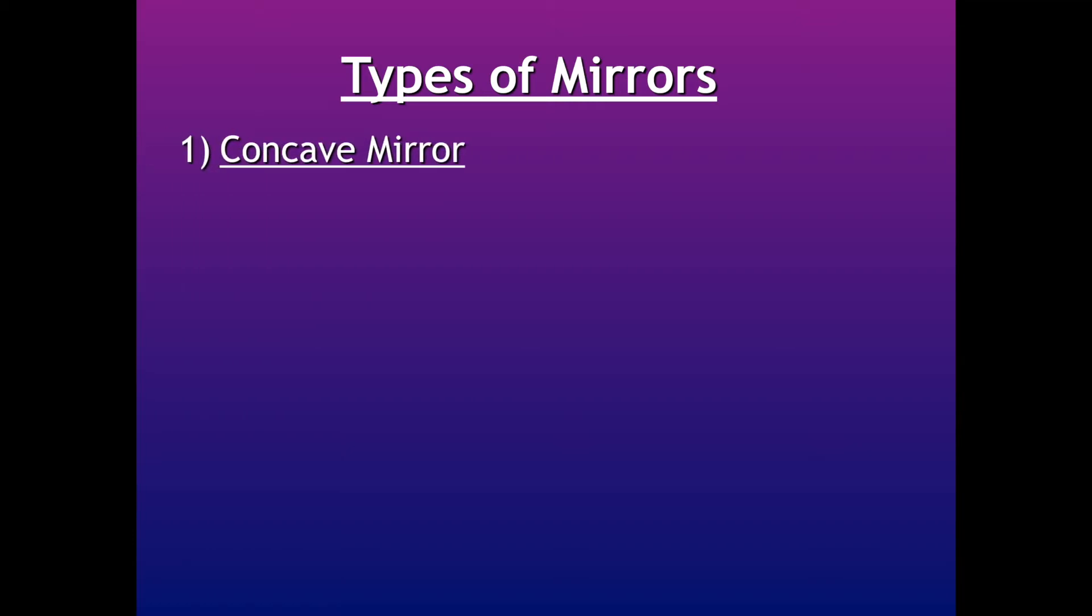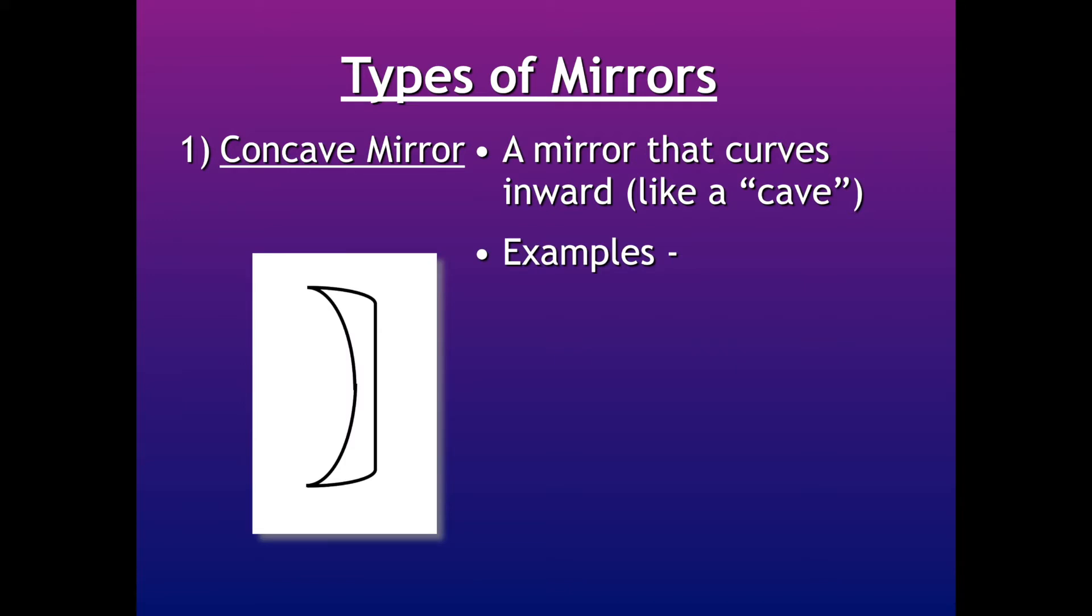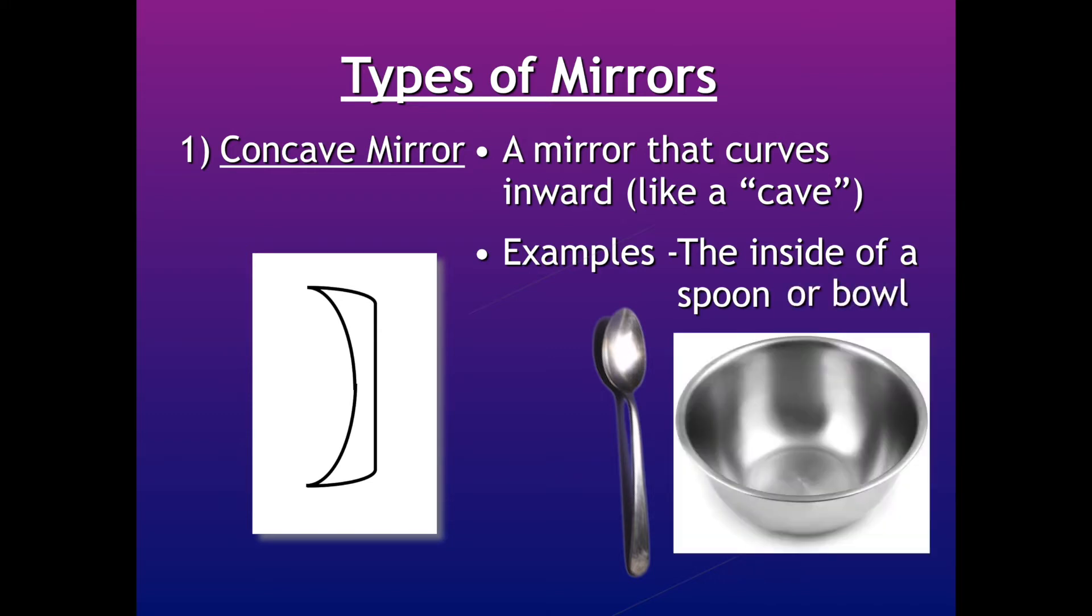So the first one is called a concave mirror. And with a concave mirror, if you kind of look at the word, it has the word cave in it. So if you think about it, what does a cave do? Does it go out or in? That's right, it goes in. So concave mirrors curve inward like a cave. That's just the way that you can remember it. Some examples are things like the inside of a spoon or a bowl, for example. So if you look at this picture here, this part here would be like the surface of a concave mirror, so it curves in. What do you think happens to the image that you see, the reflection that you see in something like a concave mirror?